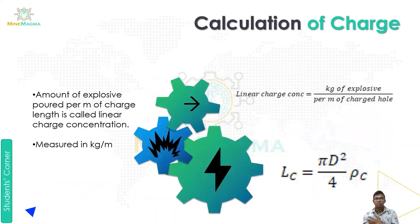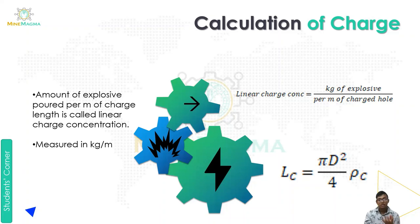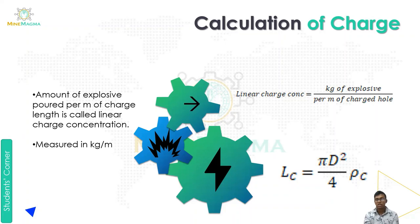Now let's go to calculation of charge. Calculation of charge is how much explosive we are going to put in the borehole. The amount of explosive per meter of charge length is called linear charge concentration. It tells us how much explosive in kg we use per meter of borehole. The formula for linear charge concentration is π d² / 4 × ρc, giving units of kg per meter of charge.